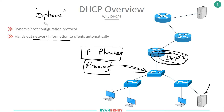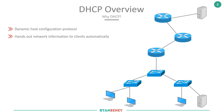At the CCENT level we need to know the basics: how to set up a pool — for example a slash 24 — so clients that connect can get the next available IP. We also need to configure a default gateway so clients inside the network can communicate outside. Another thing to configure alongside the pool and default gateway is DNS, the Domain Name System, which is coming up in later videos in this section.